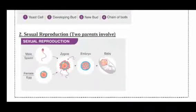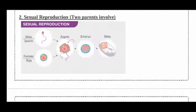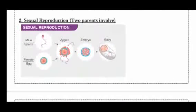The second type is sexual reproduction, in which sex organs are generally involved and two parents are required for this type of reproduction.